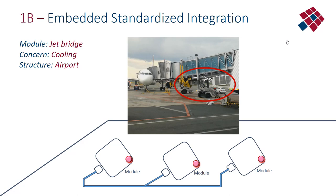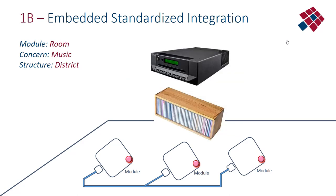More modern structures, like a jet bridge, still have a typical embedded — though standardized — air conditioning system embedded in the jet bridge installation. What is also typically embedded but standardized are music CDs and CD players. They are embedded in rooms and houses because it is a duplication of the content of the CDs and a duplication of the device knowing how to play the music, but it is kind of standardized.